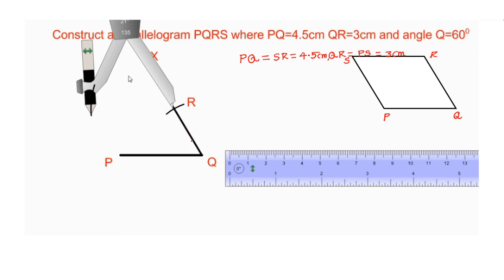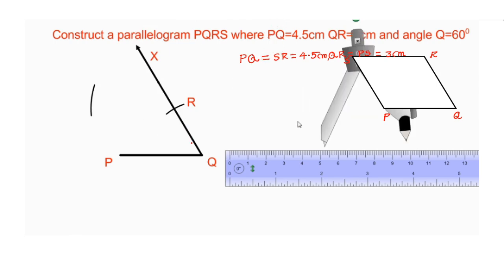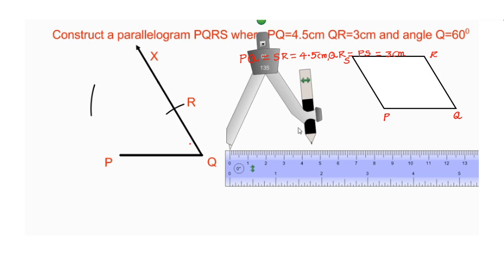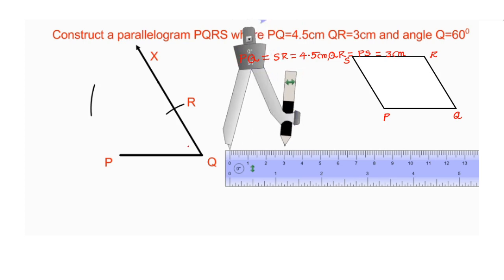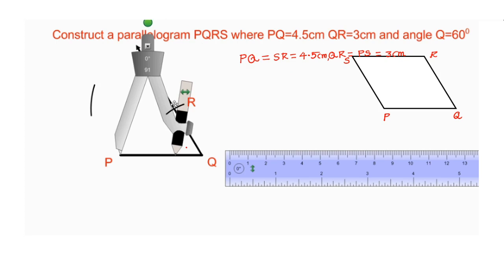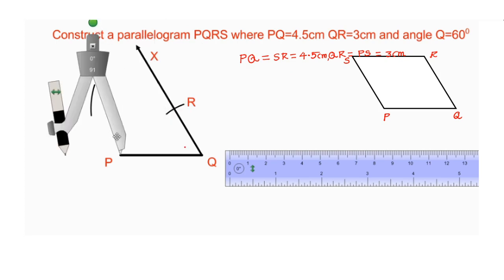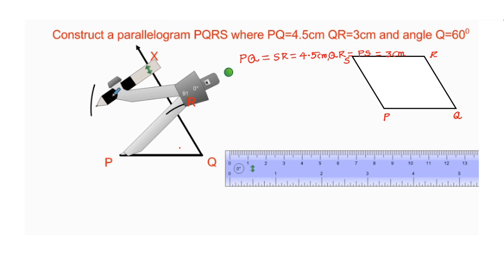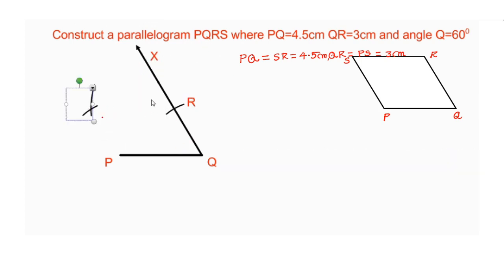We know that QR is equal to PS, and QR is equal to 3 centimeters. Take PS equal to QR equal to 3 centimeters and put the needle of the compass on P and draw an arc intersecting the previous arc. The intersection point is S.